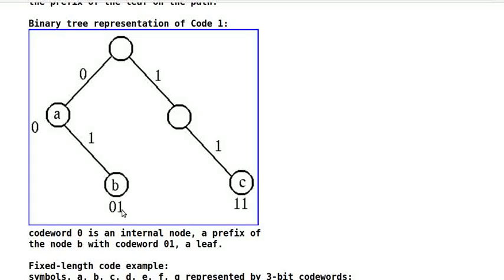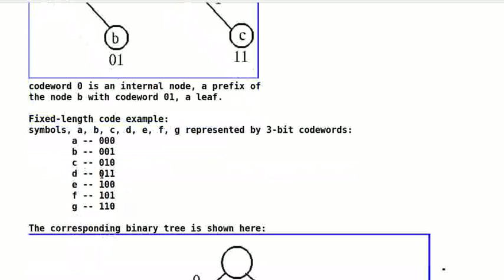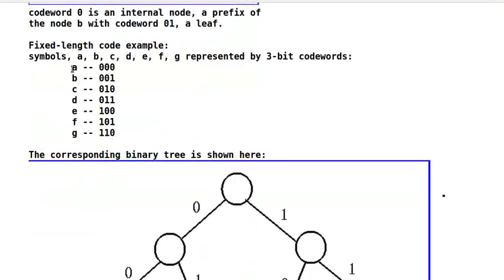A fixed length code is a code with all codewords having the same number of bits. It is always an instantaneous code because all nodes representing the codewords are at the same level and are leaves. For example, we can represent the seven symbols A, B, C, D, E, F, G by three bit codewords.